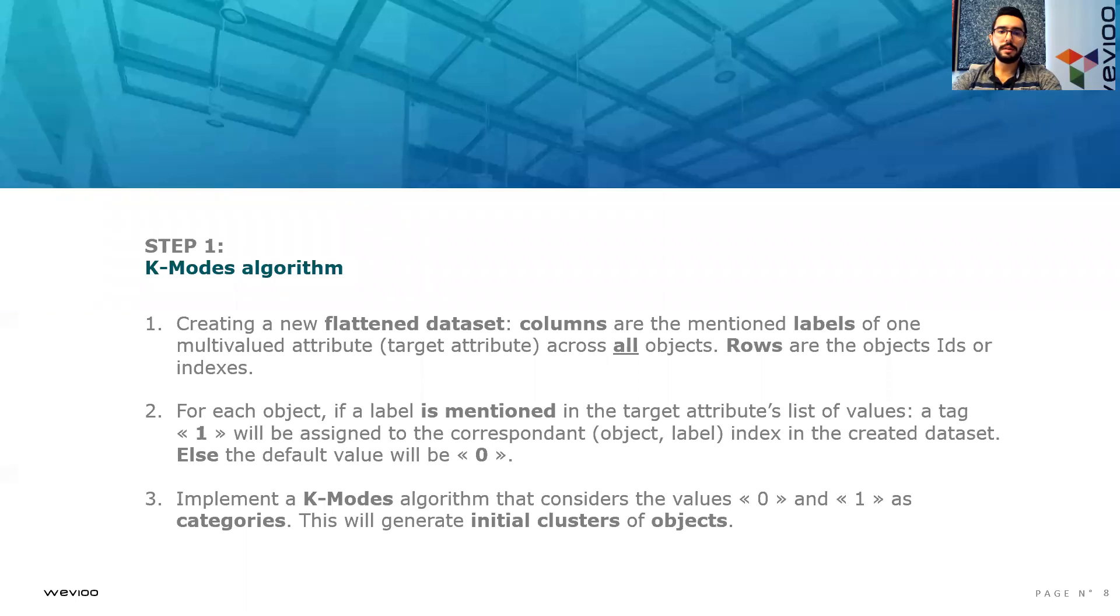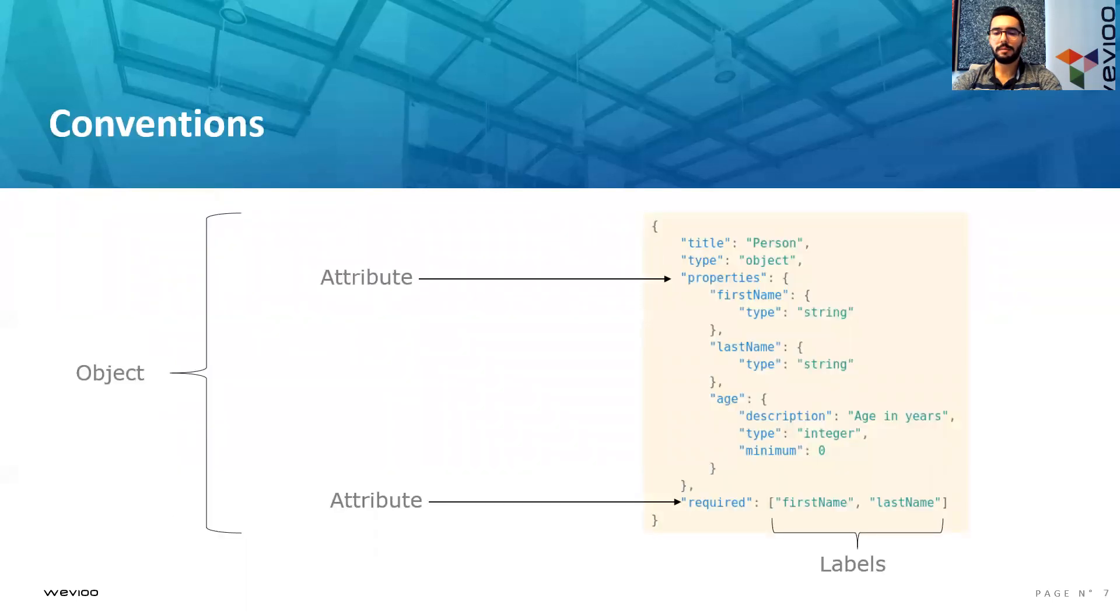Step one, the K-modes algorithm, is based on creating a new flattened dataset where columns are the mentioned labels of one multivalued attribute across all objects. Rows are the object IDs or indexes. If we go back to the previous example, the required attribute will be our target variable, which is the multivalued key. The rows will be the object IDs. The columns will be the labels of the attribute required across all the objects of the dataset.